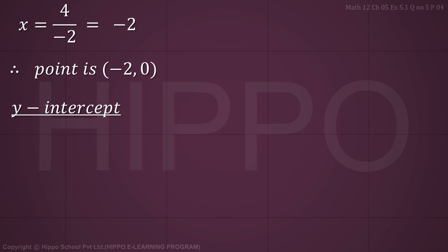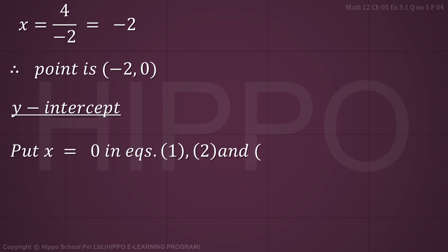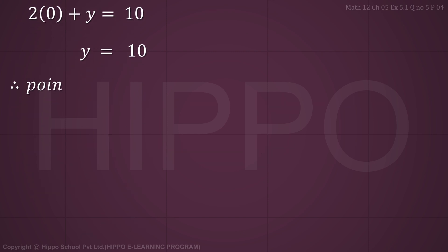Now for the y-intercepts, put x equals 0 in equation 1: 0 plus y equals 10, so y equals 10. The point is (0, 10).